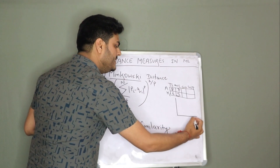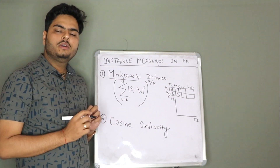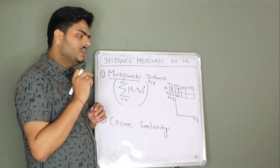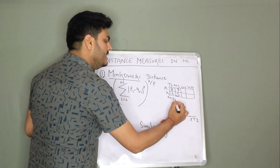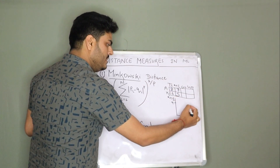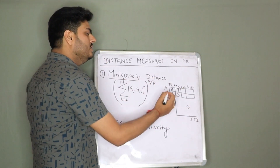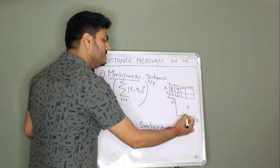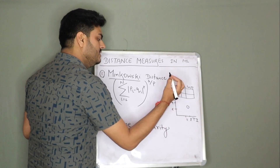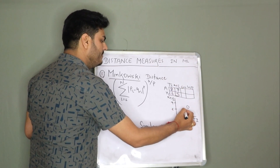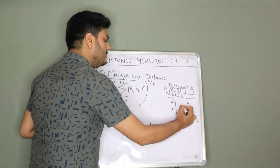Let us say this is my two-dimensional plane. On the X axis I have Titanic and on the Y axis I have Mission Impossible. How much Aman likes Titanic and how much Aman likes Mission Impossible? Let us say this is eight and this is seven roughly. So Aman will come somewhere here. What about the other guy? Titanic — the other guy gives six. The other guy likes Mission Impossible also five. So this is Aman and this is the other guy, Kumar.